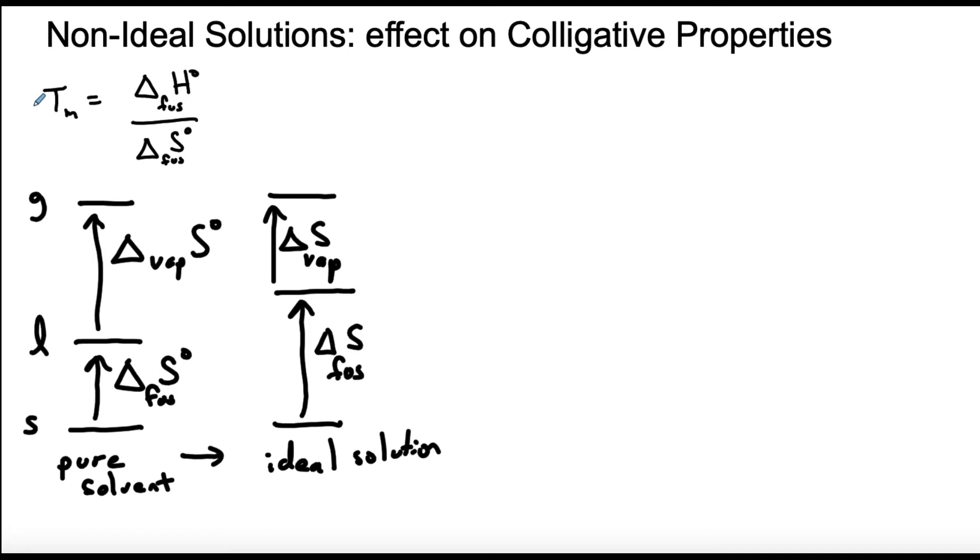What about non-ideal solutions? Notice in the explanation for ideal solutions we didn't talk about enthalpy at all. Why? Because making an ideal solution doesn't affect the enthalpy, but it can affect, as we saw just moments ago, the enthalpy of a non-ideal solution. So let's look at the effect of having non-ideal solution behavior, how that affects colligative properties.